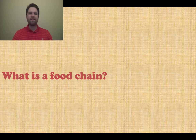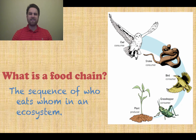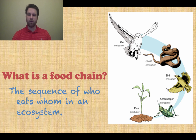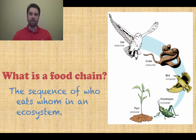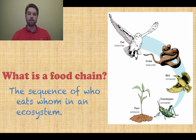So what is a food chain? A food chain is a sequence of who eats whom in an ecosystem. If you follow the arrows here, the grasshopper eats the plant, the grasshopper gets eaten by the bird, which gets eaten by the snake, which gets eaten by the owl. That's how the food chain works for this specific set of organisms.